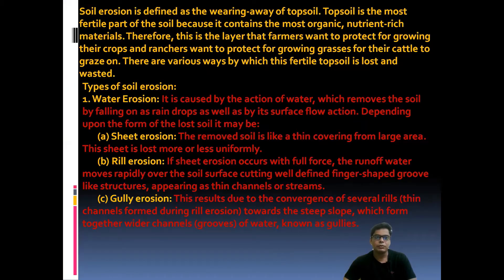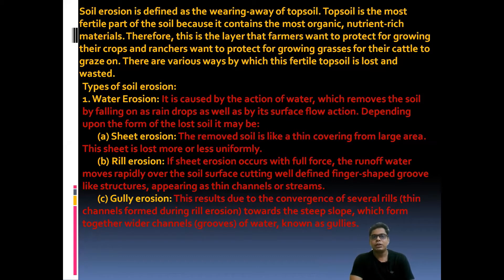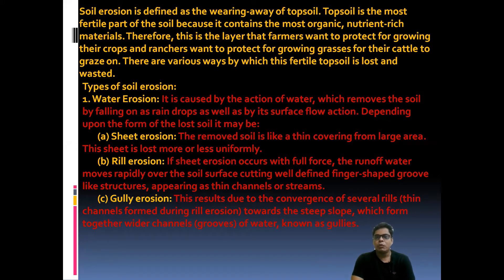First, what is soil erosion? Soil erosion is defined as a wearing away of the top soil. Top soil means the total top layer of soil — approximately 35 to 40 centimeters — and this area is known as the top soil. Top soil is the most fertile part of the soil because it contains the most organic and nutrient-rich material.